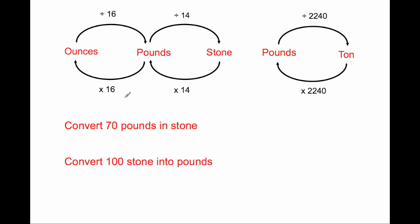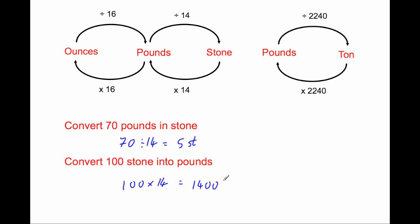Convert 70 pounds into stone. To go from pounds into stone, we divide by 14. So we do 70 divided by 14, and 70 divided by 14 is 5. So the answer is 5 stone. Next, convert 100 stone into pounds. To go from stone into pounds, we times by 14 because in each stone there are 14 pounds. So 100 times 14 equals 1,400 pounds.